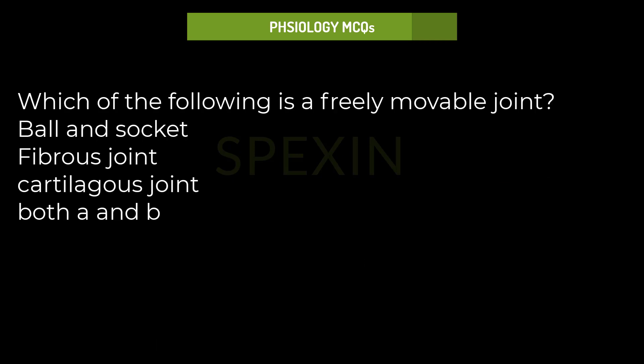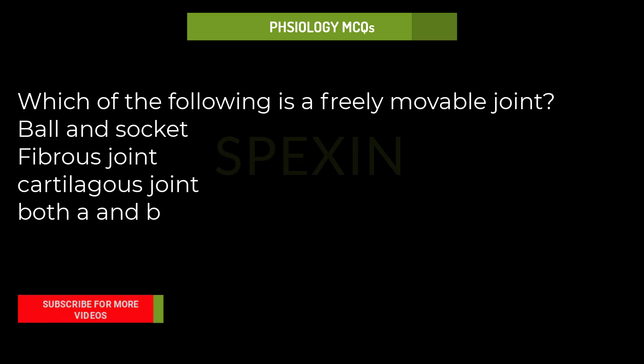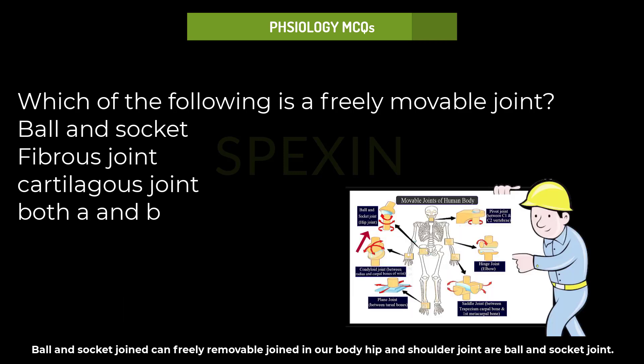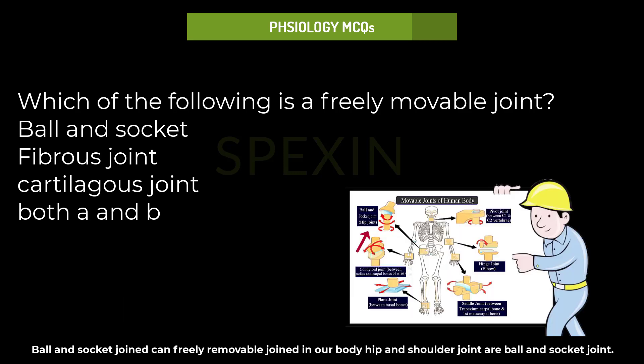Which of the following is a freely movable joint? Options: ball and socket, fibrous joint, cartilaginous joint, or both A and B. Ball and socket joint is a freely movable joint; in our body, the hip and shoulder joints are ball and socket joints.